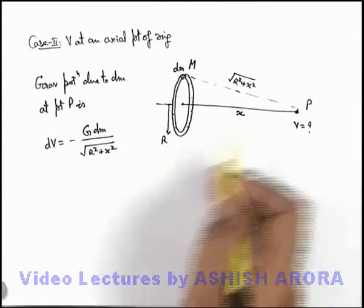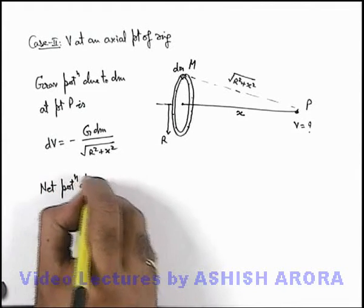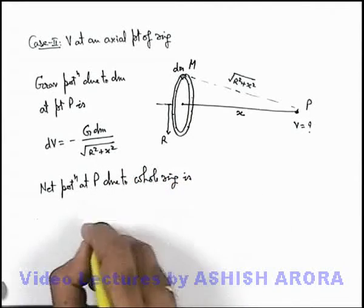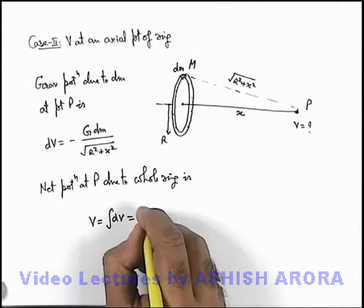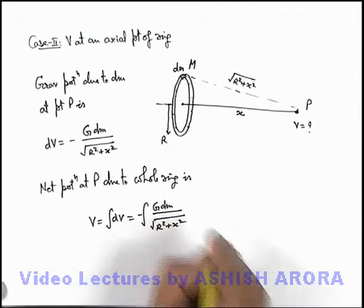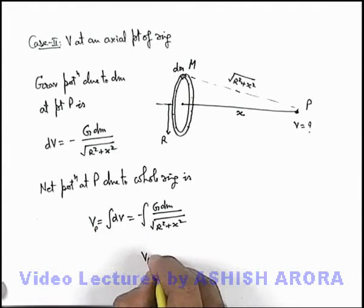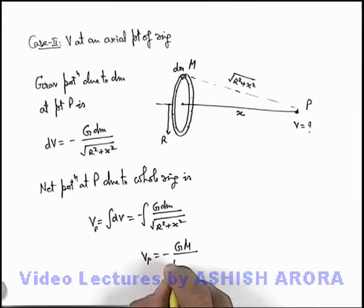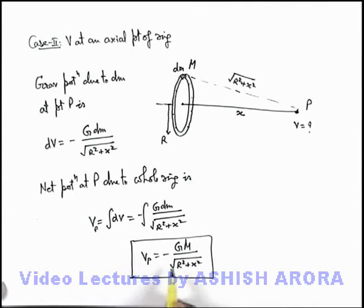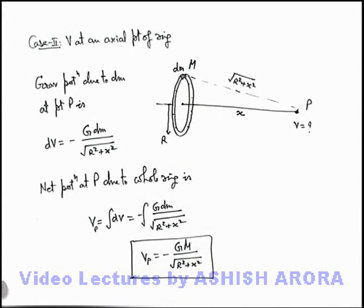Since potential is a scalar quantity, we add up all the potentials. The net potential at P due to the whole ring is V = integration of dV = integration of -G·dm / √(r² + x²). Only the mass is integrated and the rest are constants, so the potential at point P is V = -GM / √(r² + x²). This is the useful result for gravitational potential at an axial point of the ring located at a distance x from the centre of the ring.